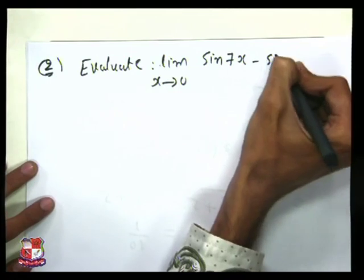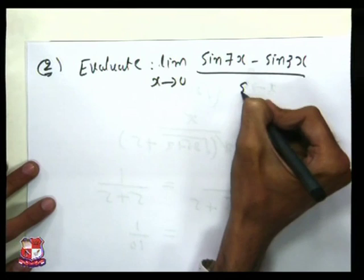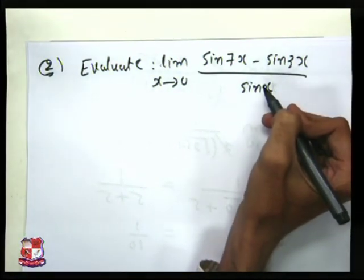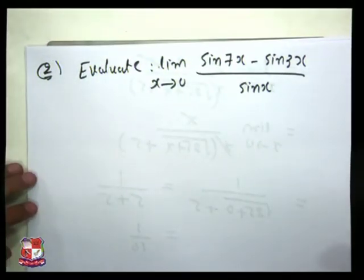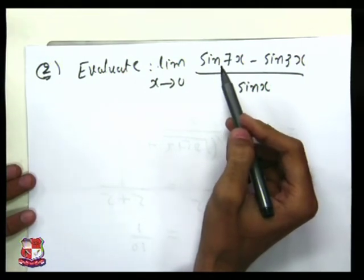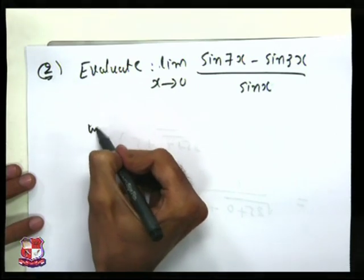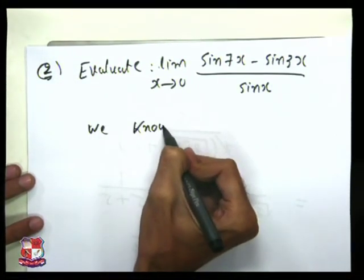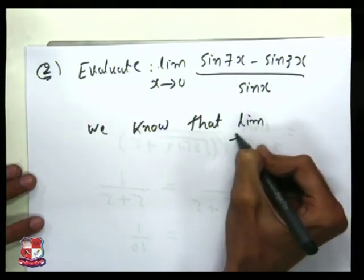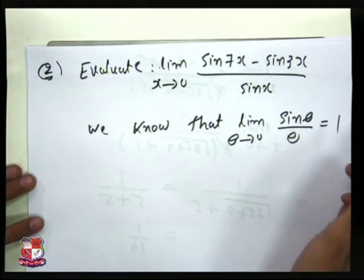The second example of 2B is: evaluate limit as x→0 of (sin7x - sin3x) / sinx. We know that when the limit has terms with sinθ, we use the formula: limit as θ→0 of sinθ/θ = 1.